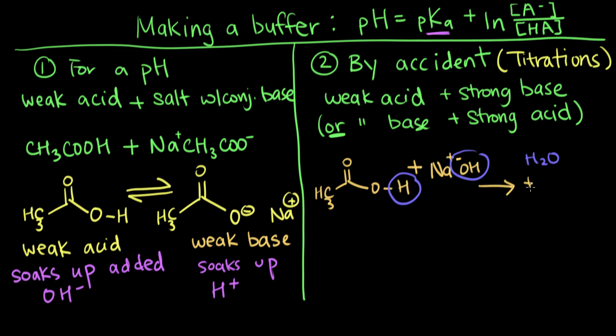And then what that leaves us with here is our acetic acid becomes acetate. And so you can see that if you react a strong base with a weak acid, if you react our weak acid with a strong base, you end up making the conjugate base of your weak acid.